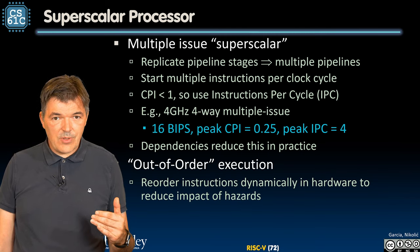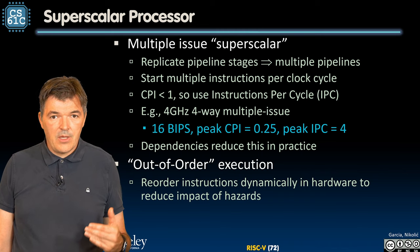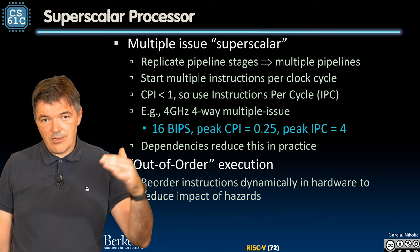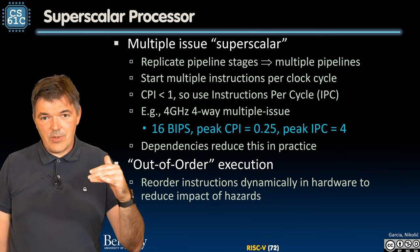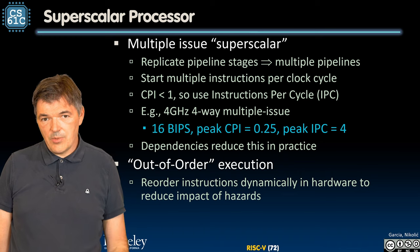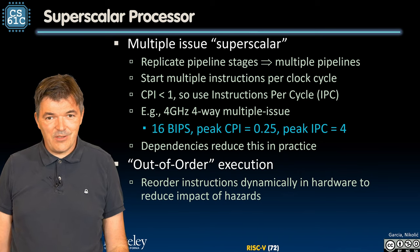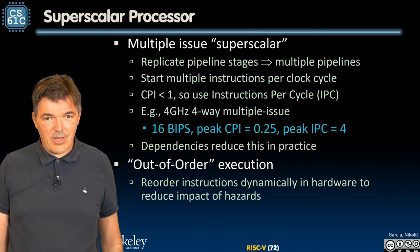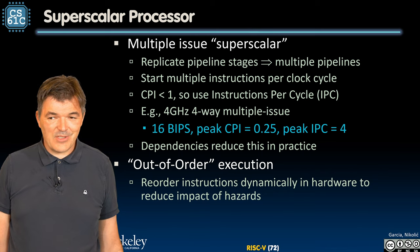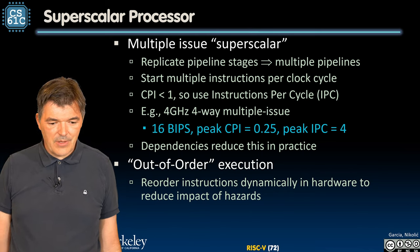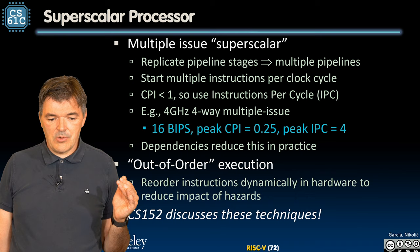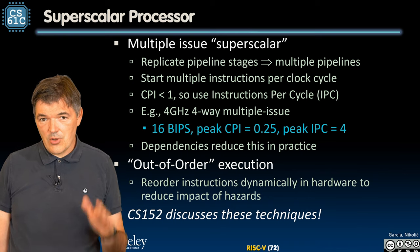Often these processors employ something called out-of-order execution. In order to deal with the dependencies and hazards, there'll be a hardware unit picking and figuring out which instructions have dependencies and trying to execute them in an order where they don't depend on each other. Then there'll be a reorder unit at the end of the pipeline that will put the results back in order such that whoever ran that program gets meaningful results. This is definitely not something we will cover in 61C, but CS152 goes into great depth on that.